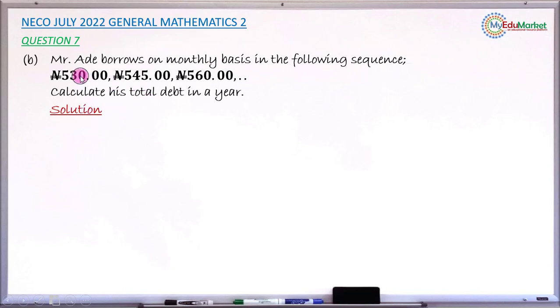Let me just copy these numbers - the amount borrowed first month, second month, and third month. I will look at these three numbers critically to discover something happening between the terms or between the values.